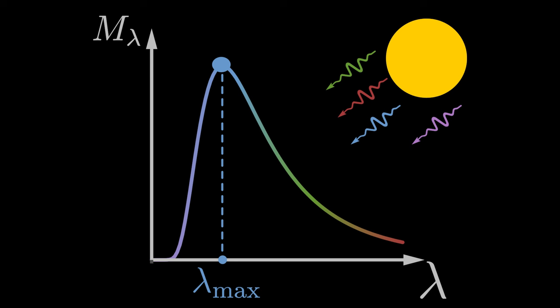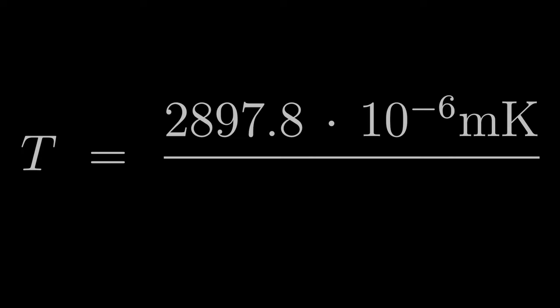Then you can calculate the temperature of the sun with Wien's displacement law. To do this, we divide 2897.8 times 10 to the power of minus 6 meter kelvin by lambda max.